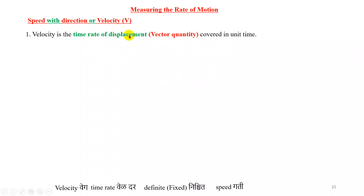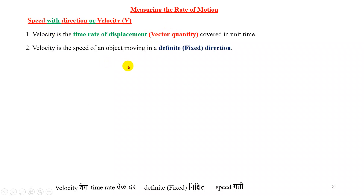Remember, displacement is a vector quantity. Vector quantity means both magnitude and direction are required. So for displacement, both magnitude and direction are mentioned. Similarly, for velocity, both magnitude and direction are mentioned. Velocity is the speed of an object moving in a definite or fixed direction.